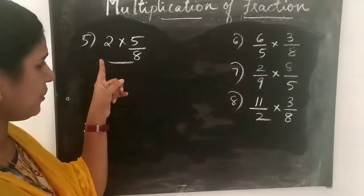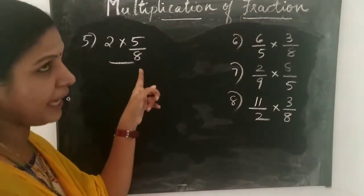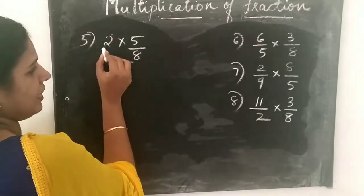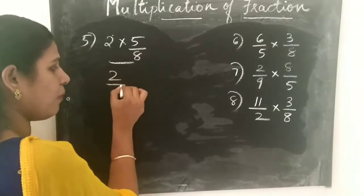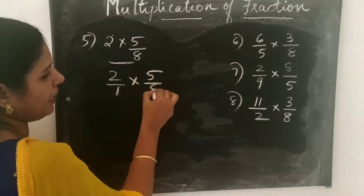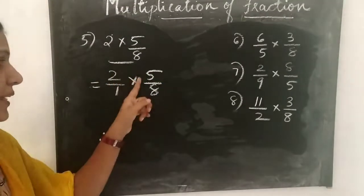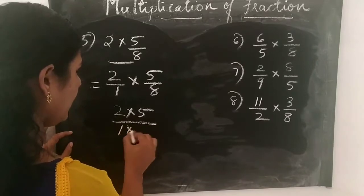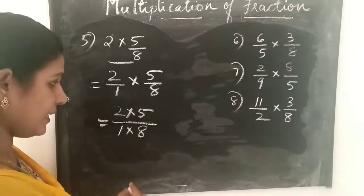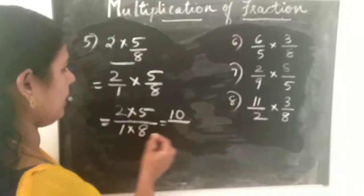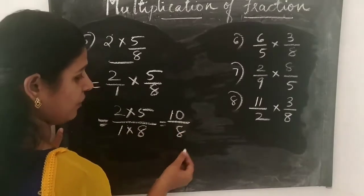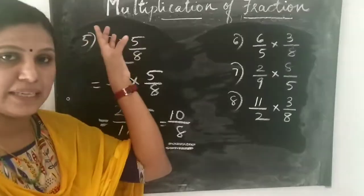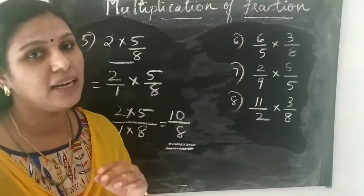The next question is 2 into 5 by 8. Here there is only one whole number, that is 2, which means 2 by 1. So we write 2 by 1 into 5 by 8. Multiply the numerators: 2 into 5 divided by 1 into 8. Now 2 into 5 is 10, and 1 into 8 is 8. We get the answer as 10 by 8. In multiplication, multiply the numerators and then multiply the denominators.